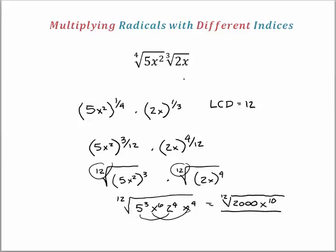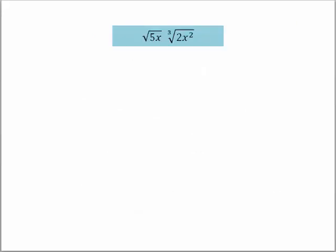So remember, the trick when you have different roots is to take them back into exponential form, find the least common denominator, and then take them back to radical form so you can multiply them. A little complicated, but here's one for you to try. Remember this radical is square, and this radical is 3. Raise the first to 1/2 and the second to 1/3, find the least common denominator, and revert back to radicals. Stop the video and try this one.